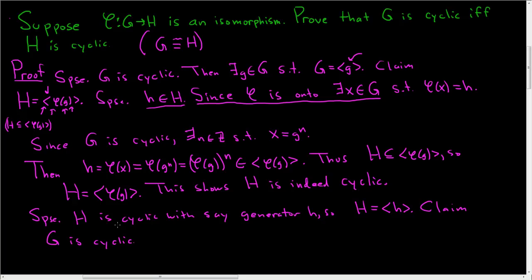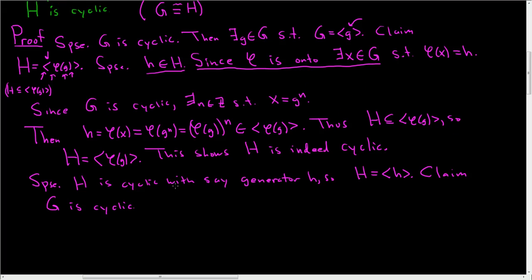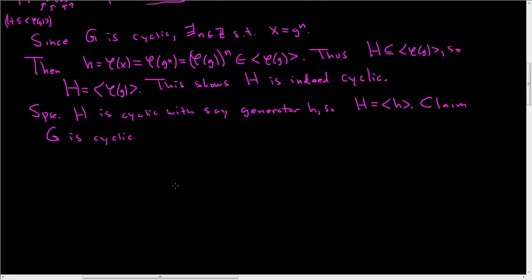So again, we need to somehow produce a generator for G. Well, again, we can use the fact that phi is onto. So since phi is onto, there is some little g in capital G such that phi of little g is equal to h. And now we'll show that G is actually generated by little g.